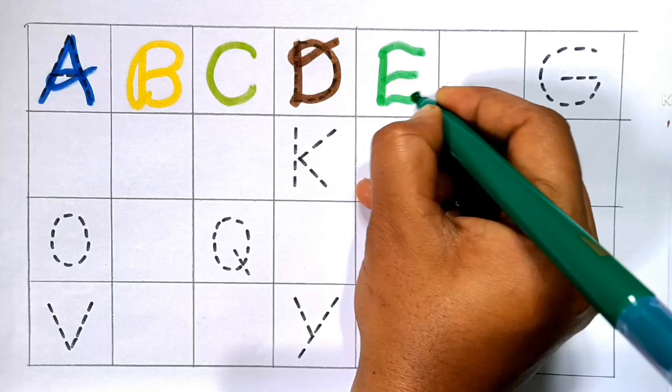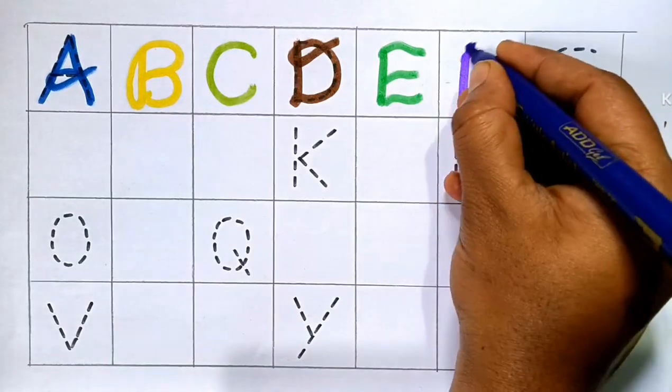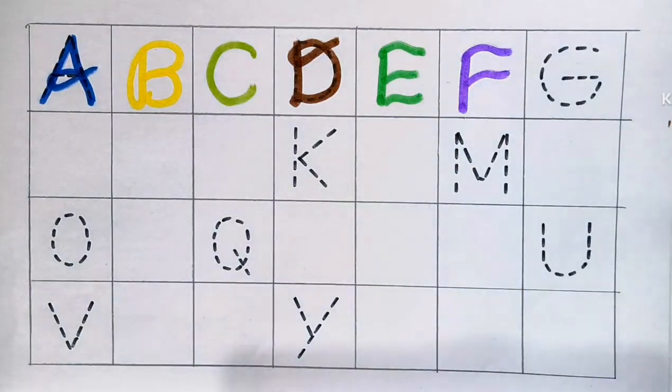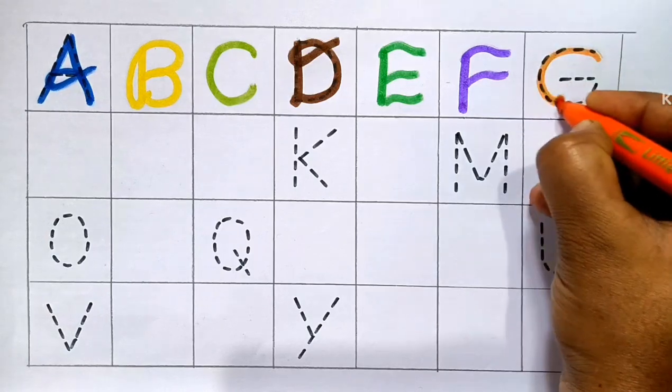A for Elephant. Next F, F for Fingers. Next G, G for Core.